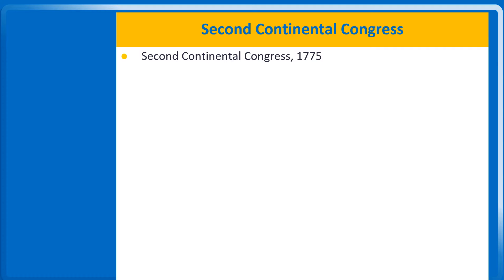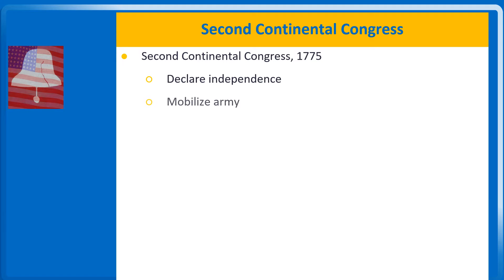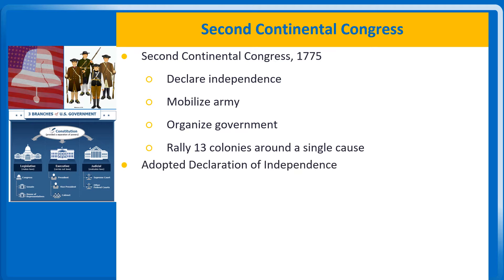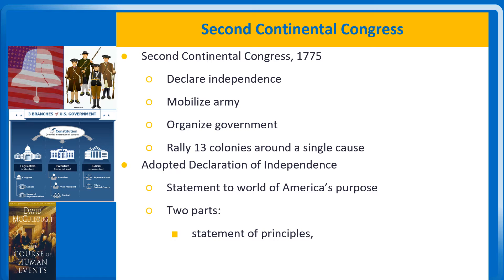The Second Continental Congress, which met in May 1775, faced the job of declaring independence, mobilizing an army, organizing a government, and rallying the 13 colonies, which were very different from each other, around a single cause. A year later, on July 4, 1776, the Congress voted to adopt a Declaration of Independence as a statement to the world of America's purpose. The document has two parts: a statement of principle, and a list of grievances.